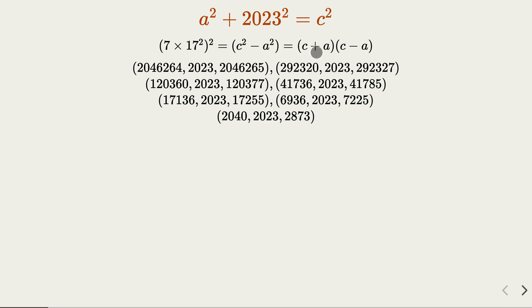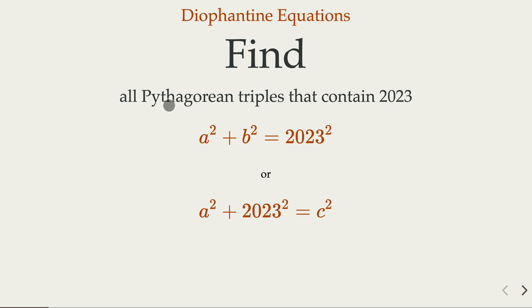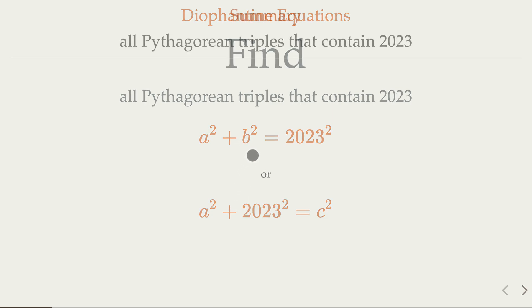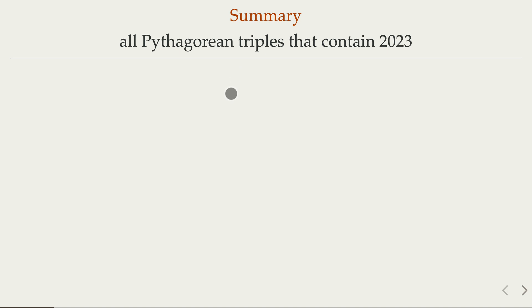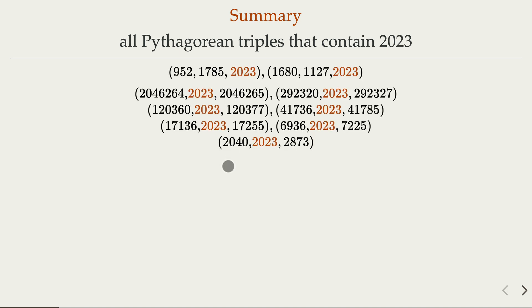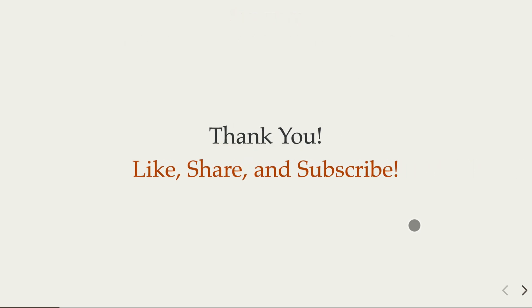So in summary, in the original question we try to find Pythagorean triples that contains 2023 as one of the sides and we consider two cases. And then from some earlier analysis we have the solutions as follows. You can go back and verify those results. So hope you enjoyed the video, please like, share, and subscribe to the channel.